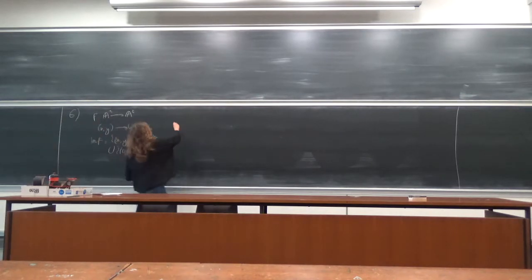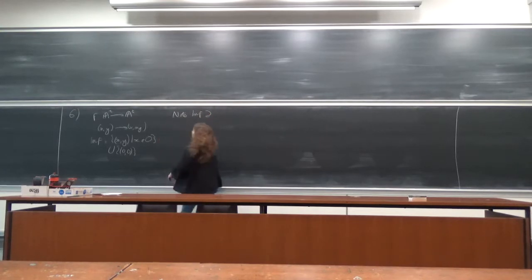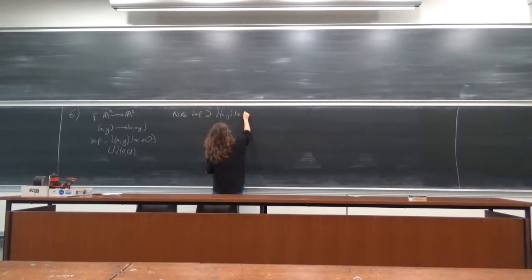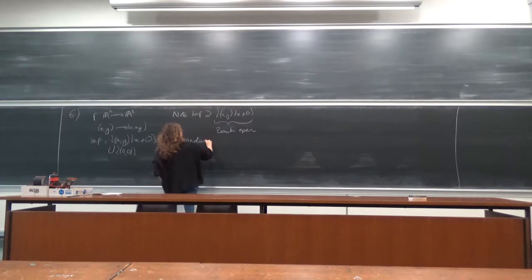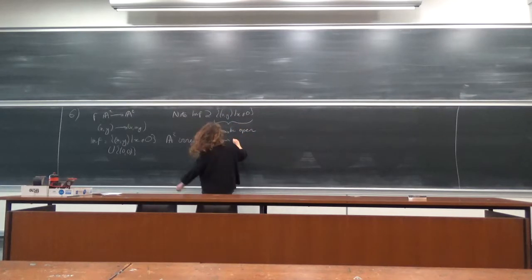So now I note that the image of f contains points of the set (x, y) with x different from zero, which is a Zariski open set. And since A² is irreducible, this implies that the image of f is Zariski dense.